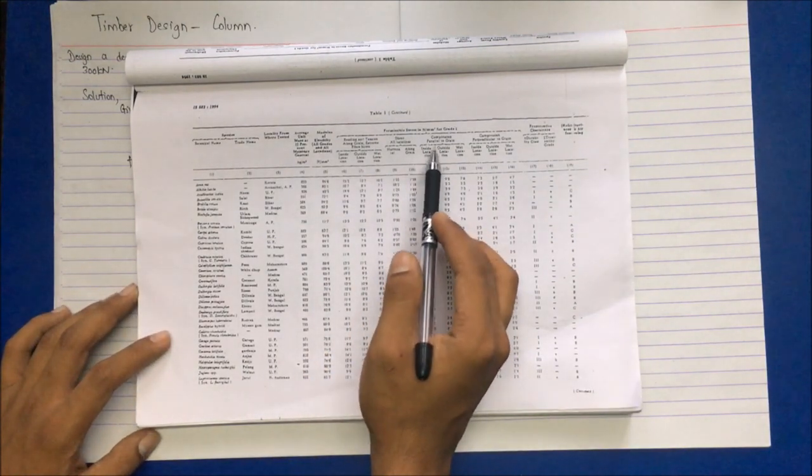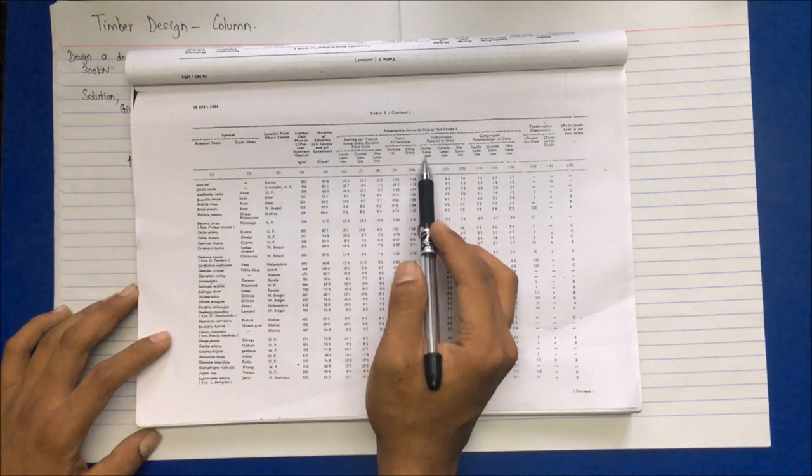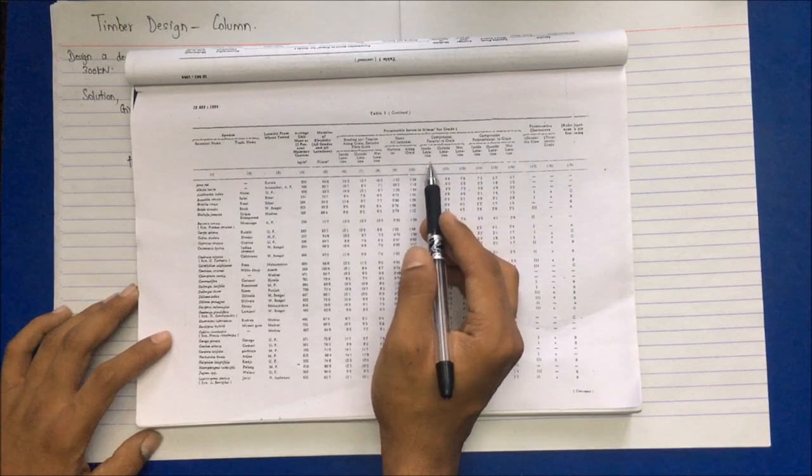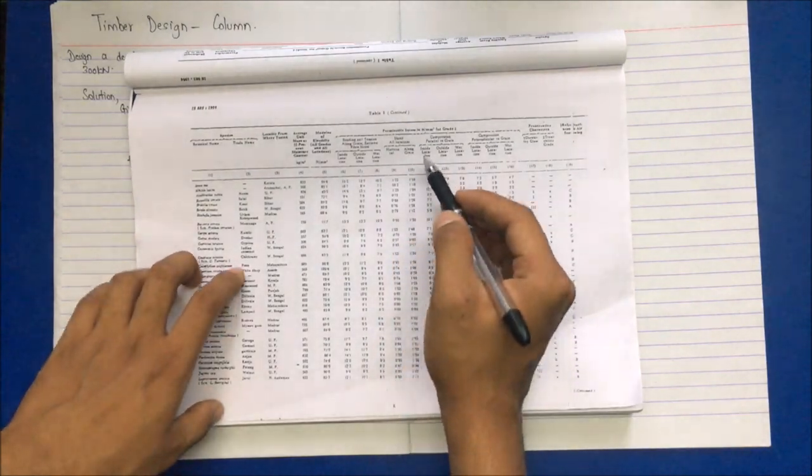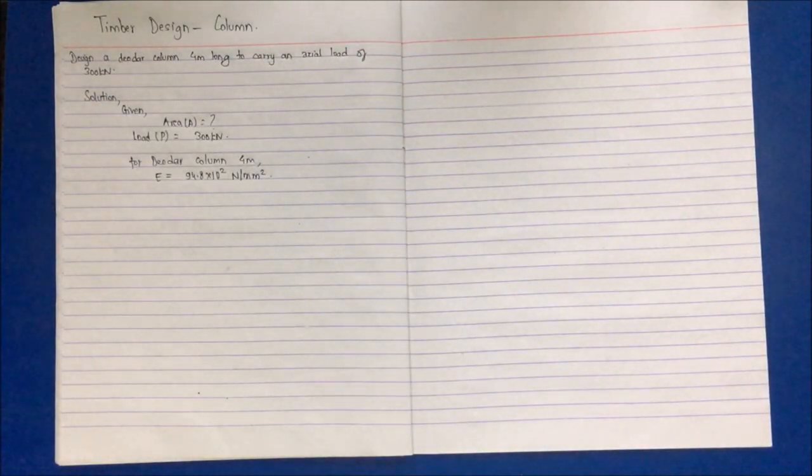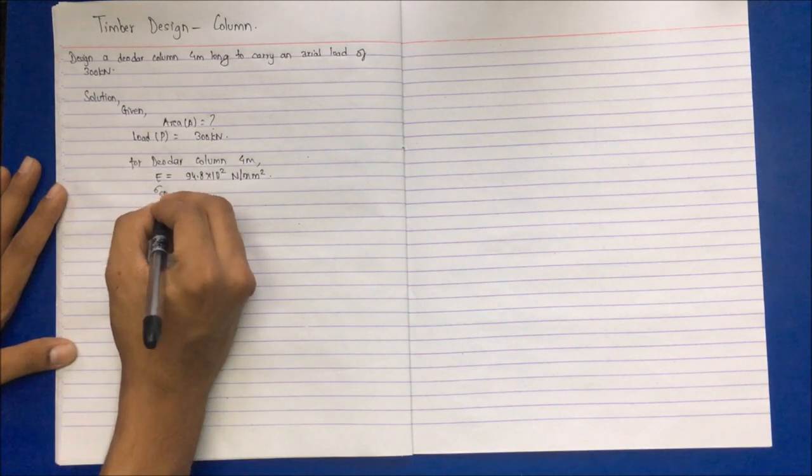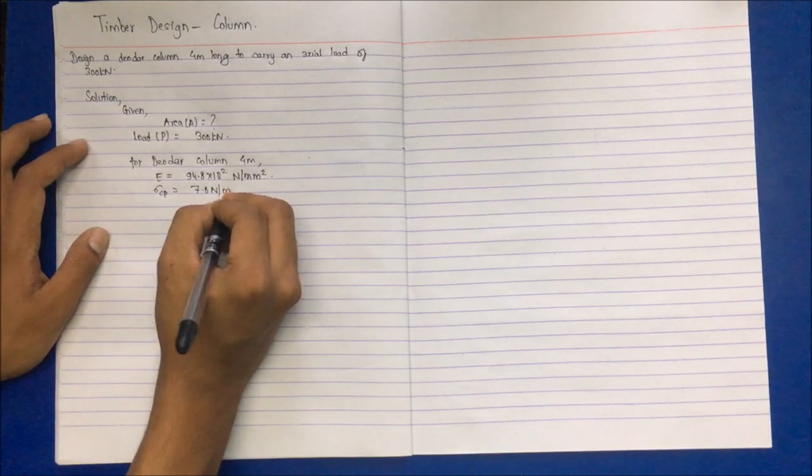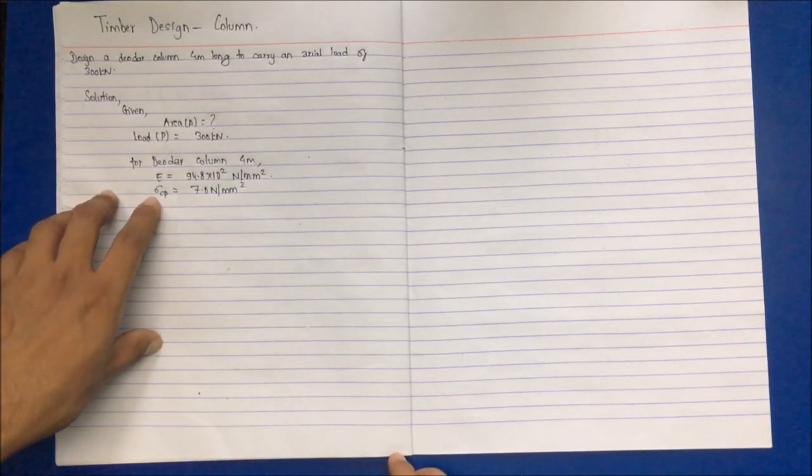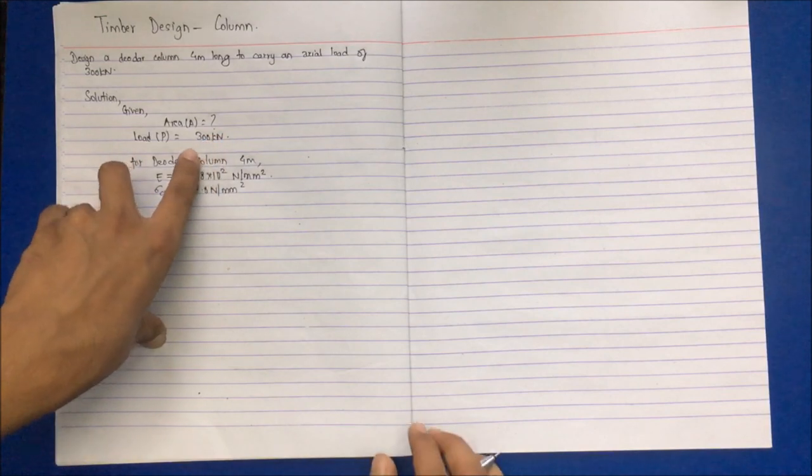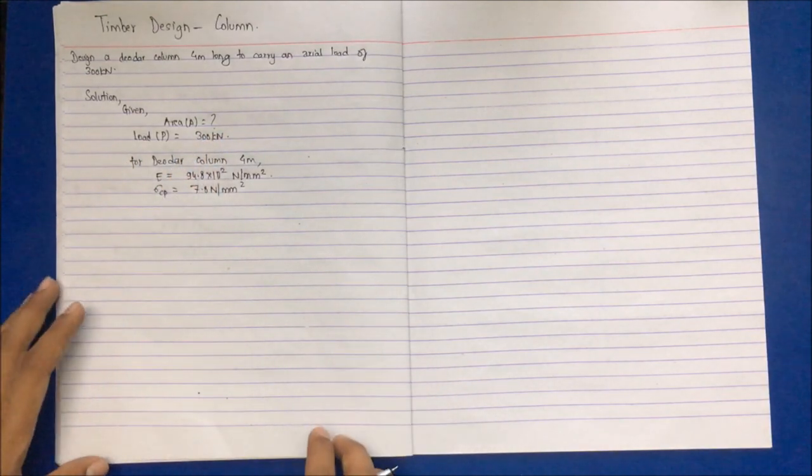Similarly, take the value for sigma cp, which is compression parallel to grain. You have three conditions: inside location, outside location, and wet location. If nothing is described in the question, take inside location. For deodor inside location, we find 7.8 newton per mm square, so sigma cp equals 7.8 newton per mm square. Please do not get confused - in code you'll find sigma cp as fcp, and I'll use l for length when the code provides s.